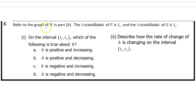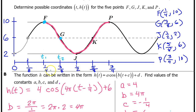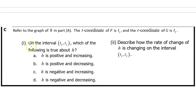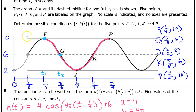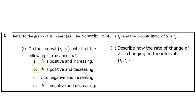Part C. Refer to the graph of h in Part A. The t-coordinate of F is T1, and the t-coordinate of G is T2. On the interval from T1 to T2, which of the following is true about h? Is h positive and increasing, positive and decreasing, negative and increasing, or negative and decreasing? From left to right along this interval, h is clearly decreasing. H is also positive on this interval because the output values are all between positive 6 and positive 10. So h(t) is positive and decreasing on this interval — the answer is B.